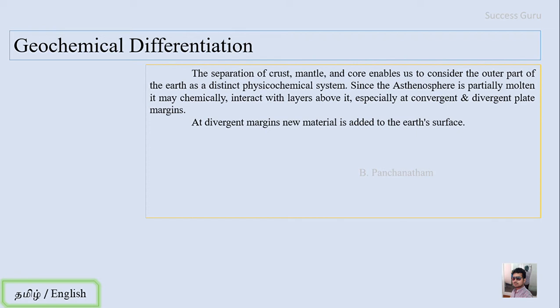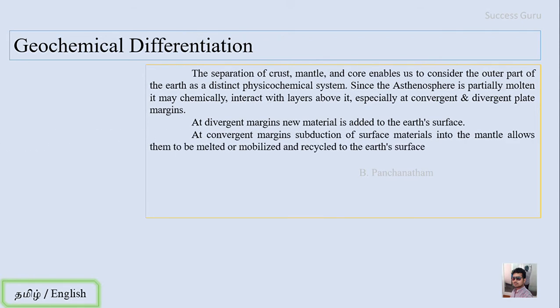As you know, in the divergent boundary, new material is raised up in the mid-oceanic ridge and that has been added to the earth surface. In the convergent boundary, due to subduction, the previously formed oceanic crust has been subducted beneath the layers of the lithosphere and that will be mobilized and recycled towards the upper mantle.